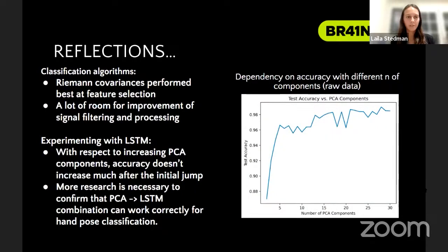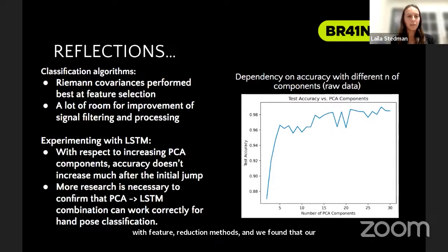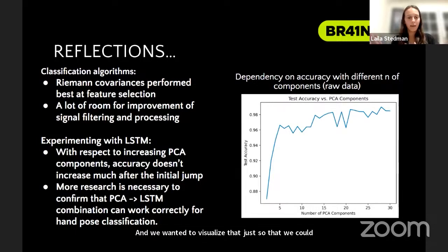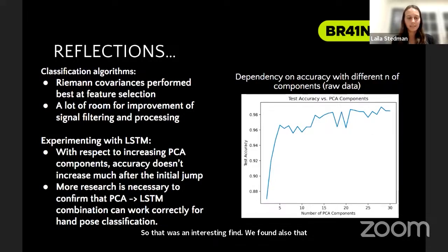After completing our project, we wanted to reflect on what we had learned. We were able to try different classification algorithms and combinations with feature reduction methods, and found that Riemann covariances performed best at the feature selection level. We also found there was still room for improvement in signal filtering and processing. The graph on the right shows the different numbers of PCA components we tried and how that reflects test accuracy — there is an initial jump, but then it stabilizes. We also found that more research would be necessary to confirm that the PCA and LSTM combination would work correctly for hand-closed classification.